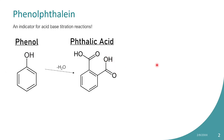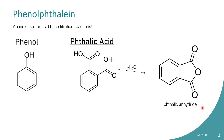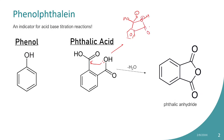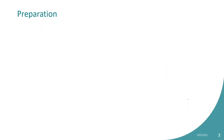Phthalic acid can very easily get dehydrated to release H₂O and produce phthalic anhydride, forming a five-membered ring. The lone pair attacks the carbonyl group, the carbonyl is restored, and OH⁻ along with H⁺ are released. So phthalic acid is very easily dehydrated and exists as phthalic anhydride.